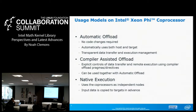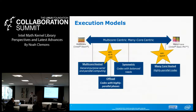You can use automatic offload in conjunction with compiler-assisted offload. Native execution means you copy the input data, drop the executable on the card, and log into it as an independent node to run code there. That can be the fastest mode because there's no data transfer overhead, but it needs to be highly parallel. Here's a convenient graph of the execution models: starting with multi-core hosted, in the offload world, some codes are highly amenable to parallelizing on the coprocessor, some are not, and some have balanced needs.